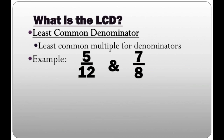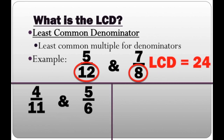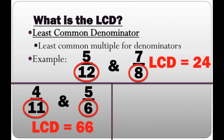How about 5/12 and 7/8? In five twelfths, the denominator is 12. In seven eighths, the denominator is 8. So what's the least common multiple for 12 and 8? That's 24, so the LCD is 24. How about 4/11 and 5/6? In four elevenths, the denominator is 11. In five sixths, the denominator is 6. Since the least common multiple is 66, the LCD is 66.